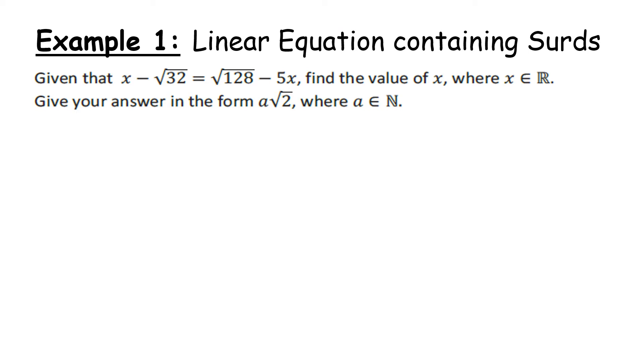Example 1: Let's look at a linear equation containing surds. Given that x - √32 = √128 - 5x, find the value of x where x is an element of ℝ, the real numbers. Give your answer in the form a√2 where a is an element of ℕ, the natural numbers.